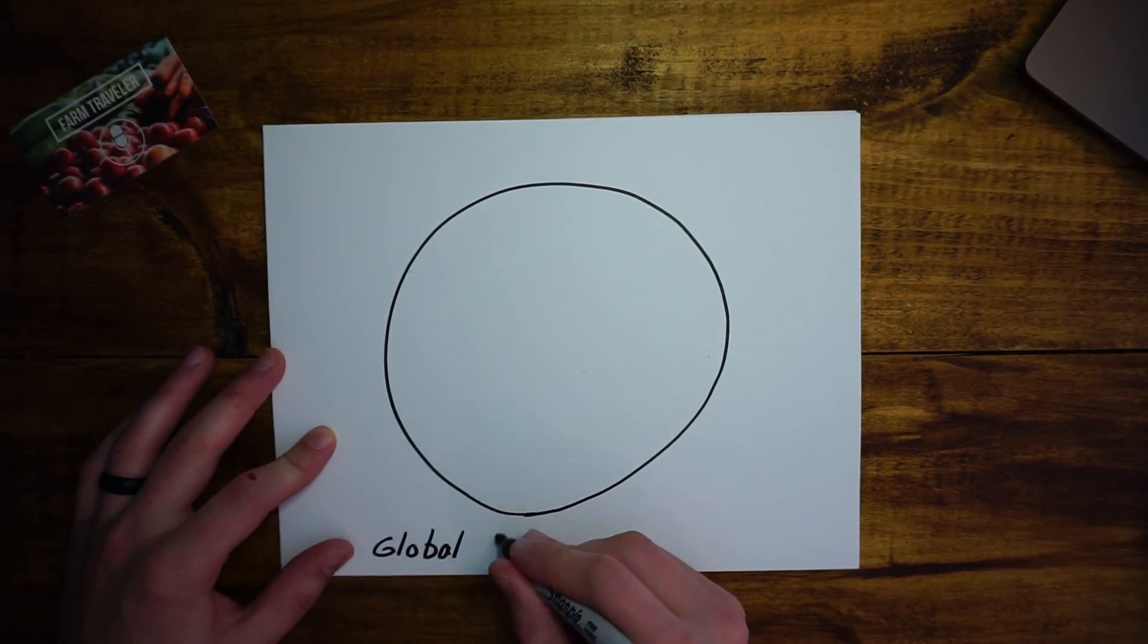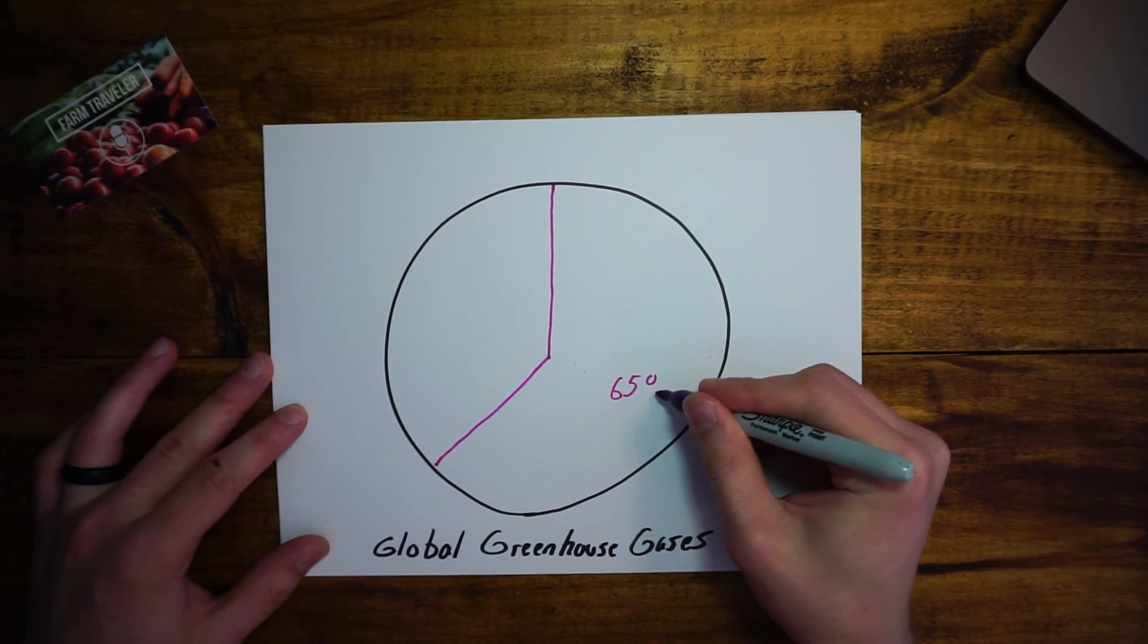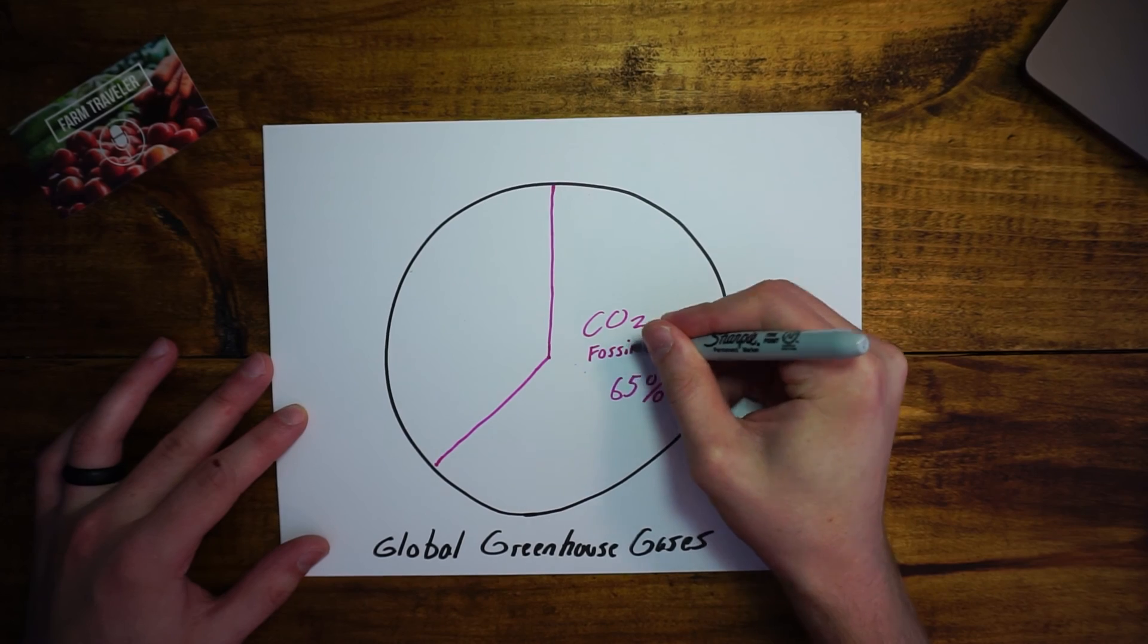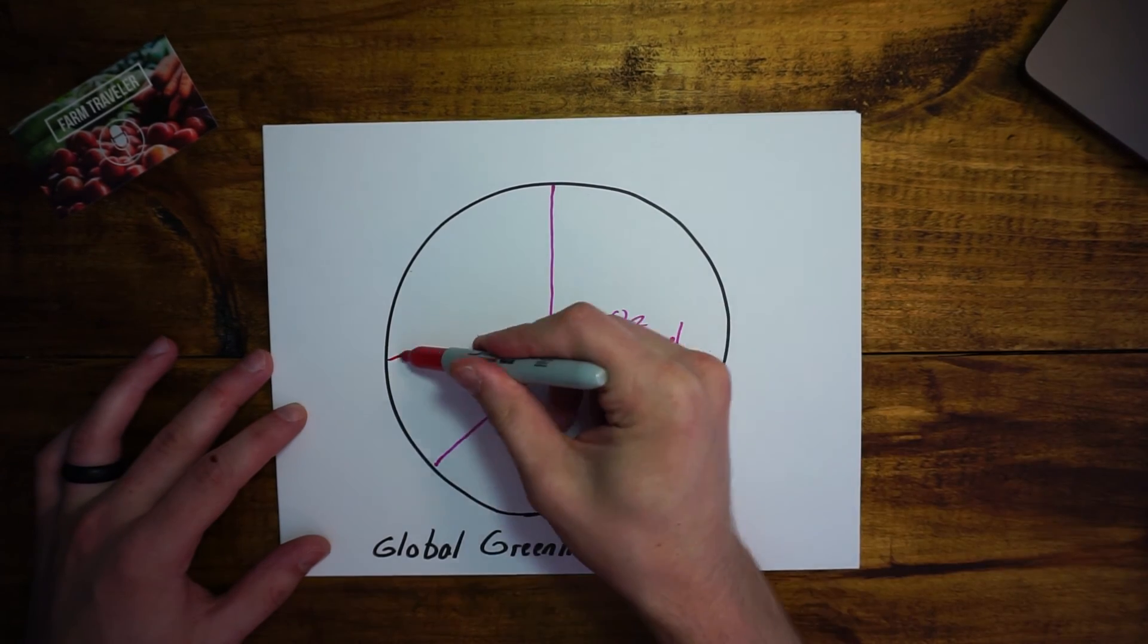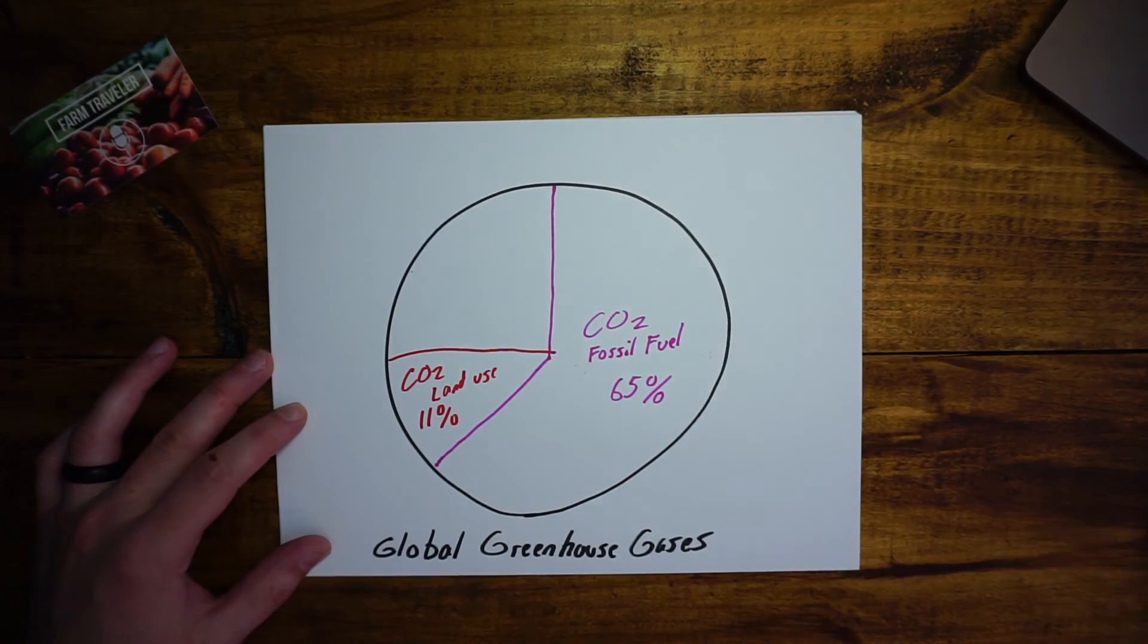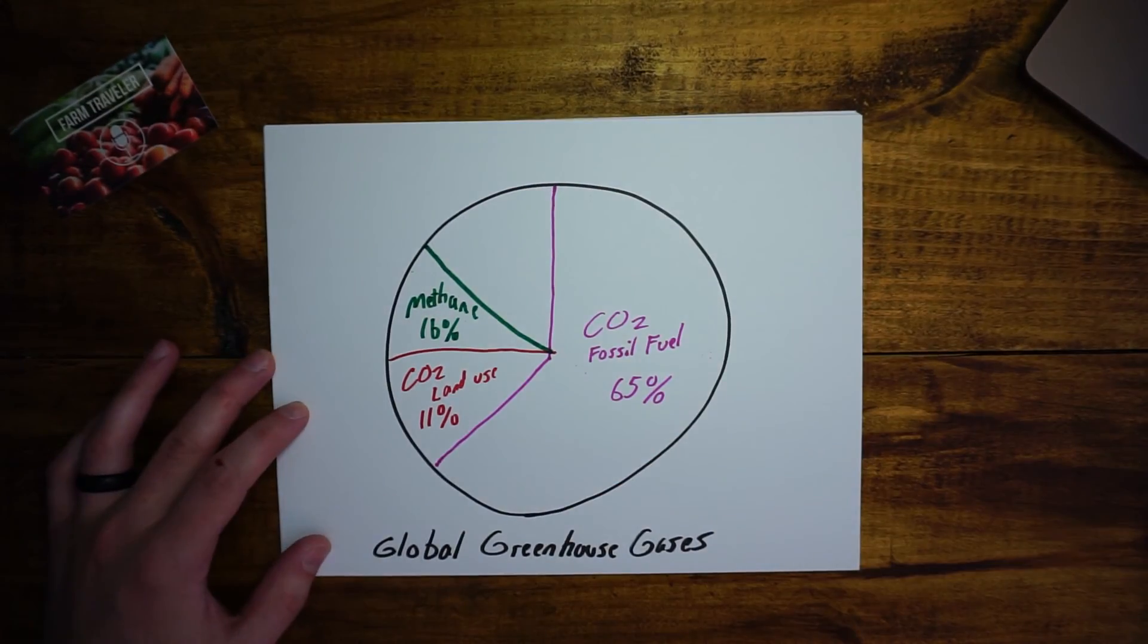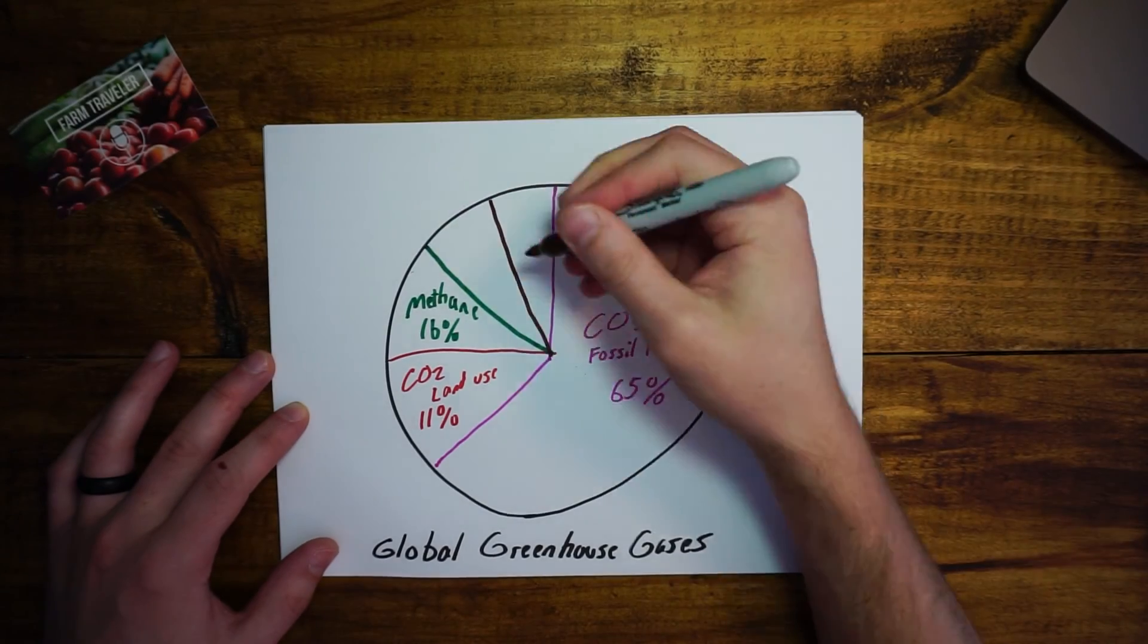Here are some of the causes of those greenhouse gases. CO2, mostly from burning of fossil fuels like oil, gas, and coal. Next is CO2 from land use, which is caused by deforestation and land clearing. Methane, produced through things like production of coal, natural gases, and oil. Also from agricultural practices like livestock manure and decaying organic matter.